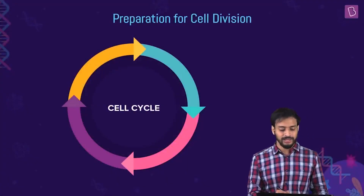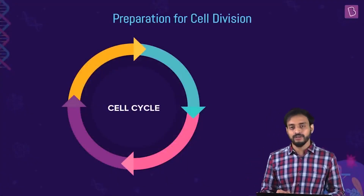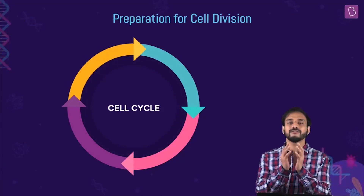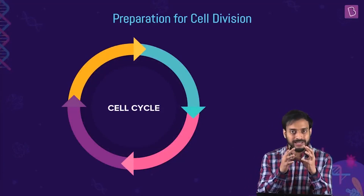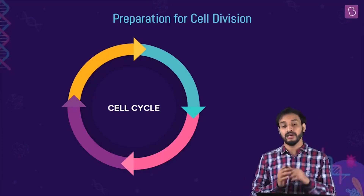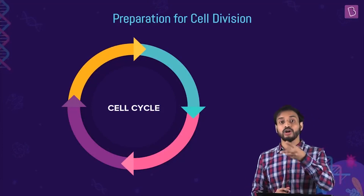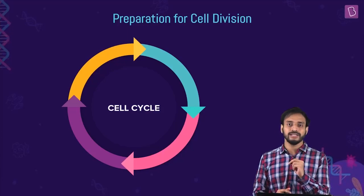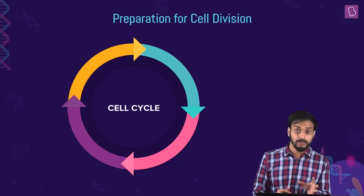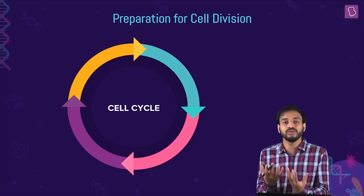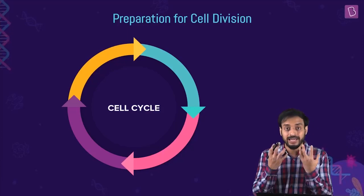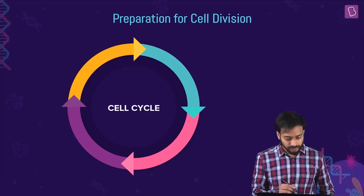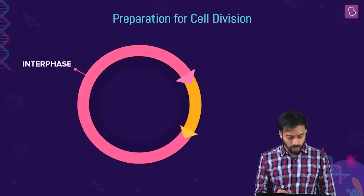The cell cycle is a preparation for cell division — it's a massive process because one cell is going to form two daughter cells. In this process, a lot of things have to happen because it's actually giving rise to two new cells, and everything has to be taken care of properly.